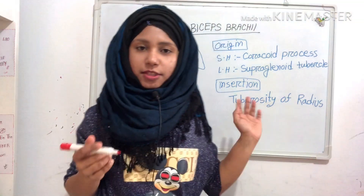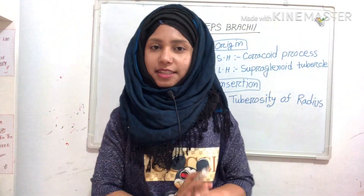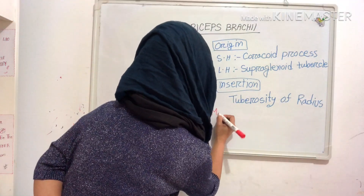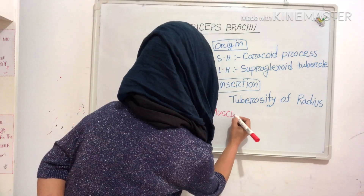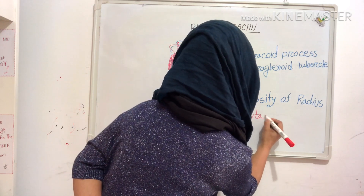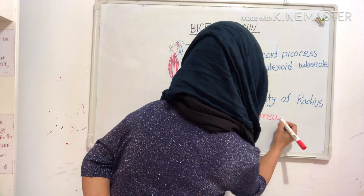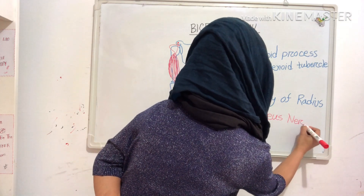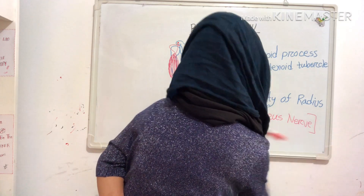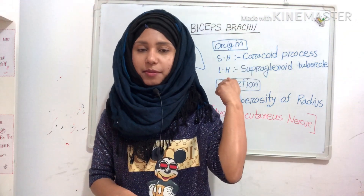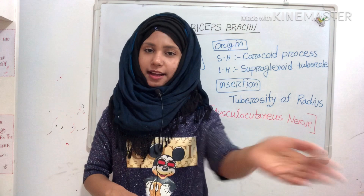This is our biceps brachii muscle, and this muscle is supplied by the musculocutaneous nerve. Its action is it flexes the forearm and supinates the hand.